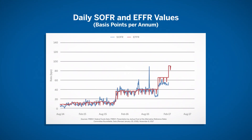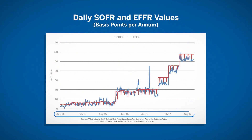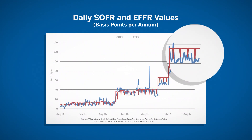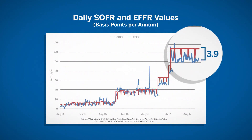This chart displays daily SOFR and effective Fed funds rate, or EFFR, values during the August 22, 2014 through October 17, 2017 period. The red line shows the daily EFFR, while the blue line shows the daily SOFR rate. The daily SOFR shows broad similarity to the daily EFFR, which is the underlying reference for CME Group's 30-day federal funds futures. On average, daily SOFR is 3.9 basis points lower than the daily EFFR.